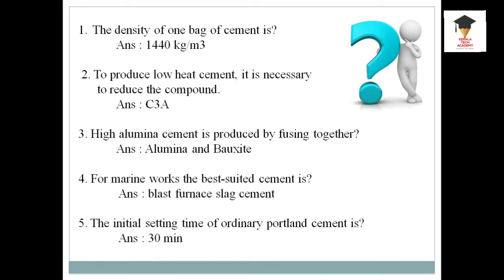Now let us see the main questions asked in many question papers. The first important question: the density of one bag of cement. The answer is 1440 kg per cubic meter. We also ask: the weight of one bag of cement, which is 50 kg. But here it gives the density of one bag of cement — the answer is 1440 kg per cubic meter.